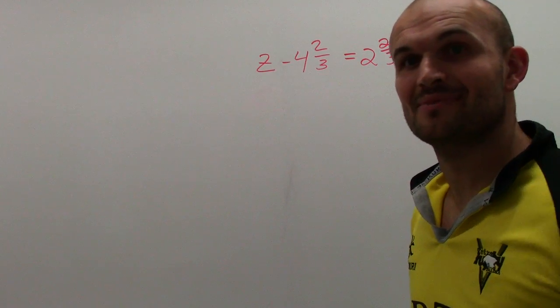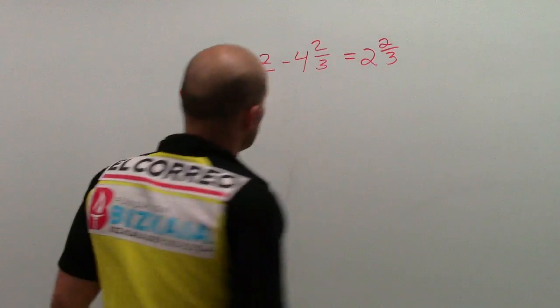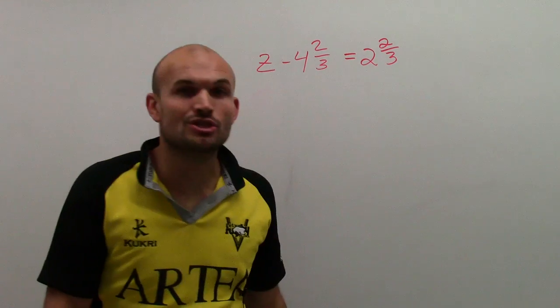Who says that the numbers have to be nice? We have z minus 4 and 2 thirds equals 2 and 2 thirds.